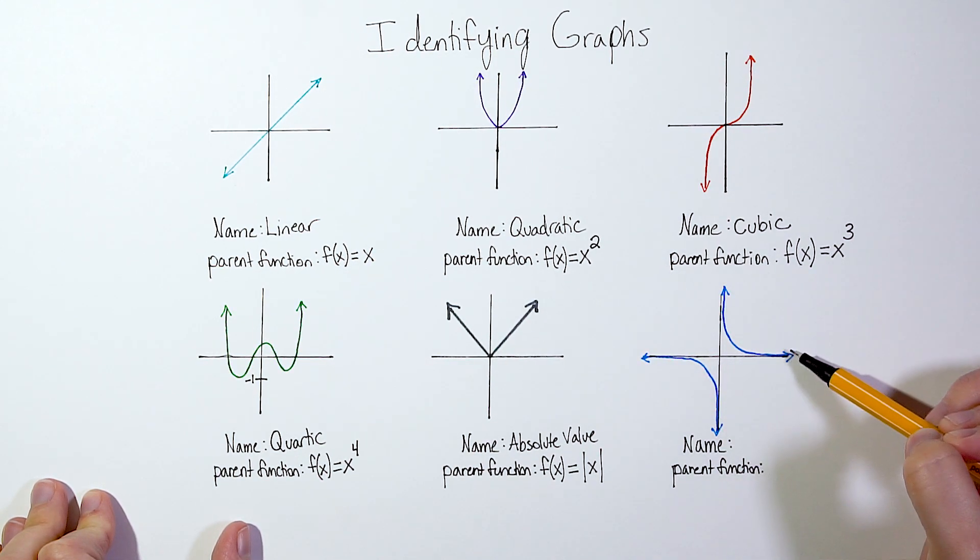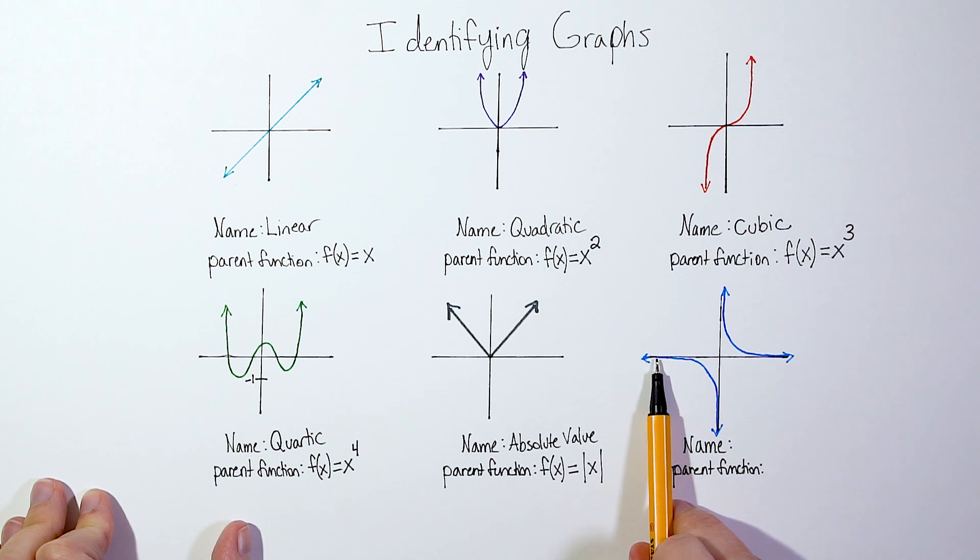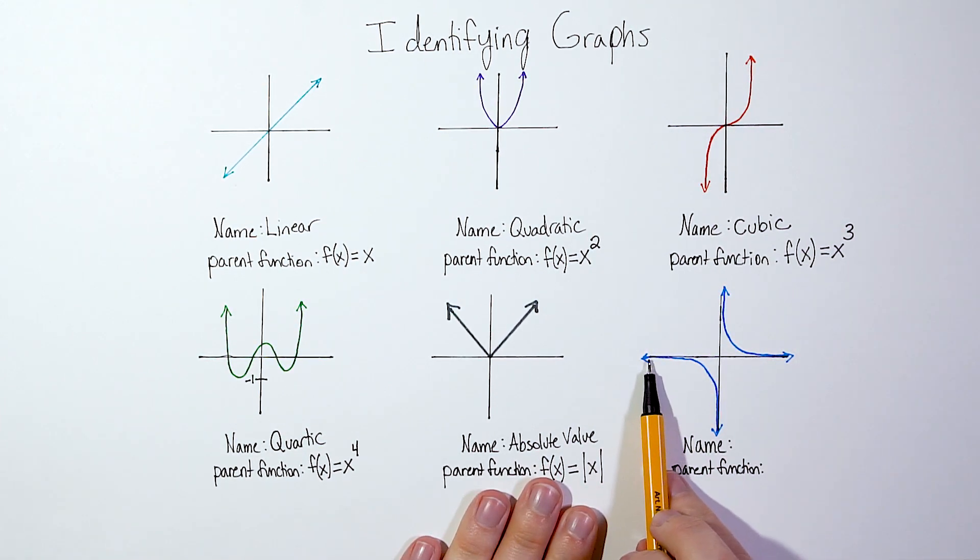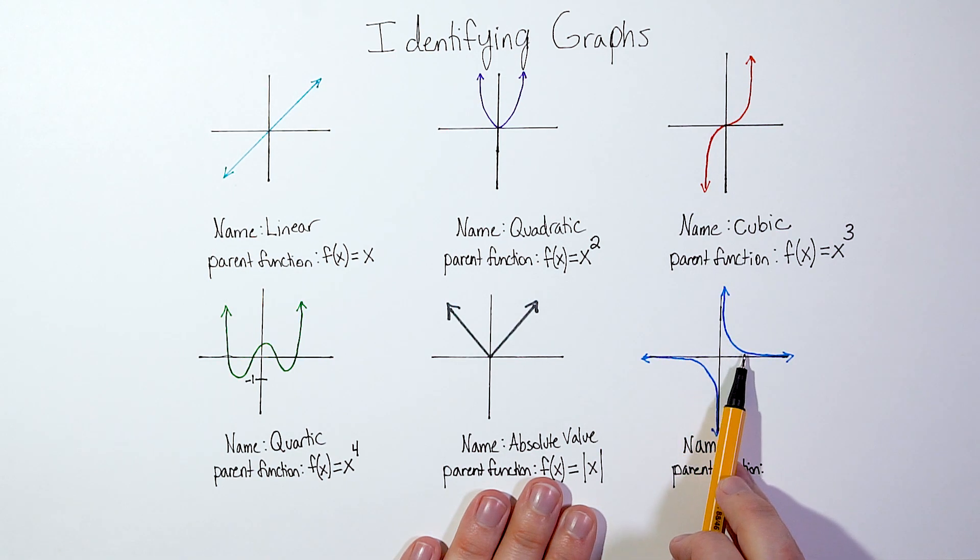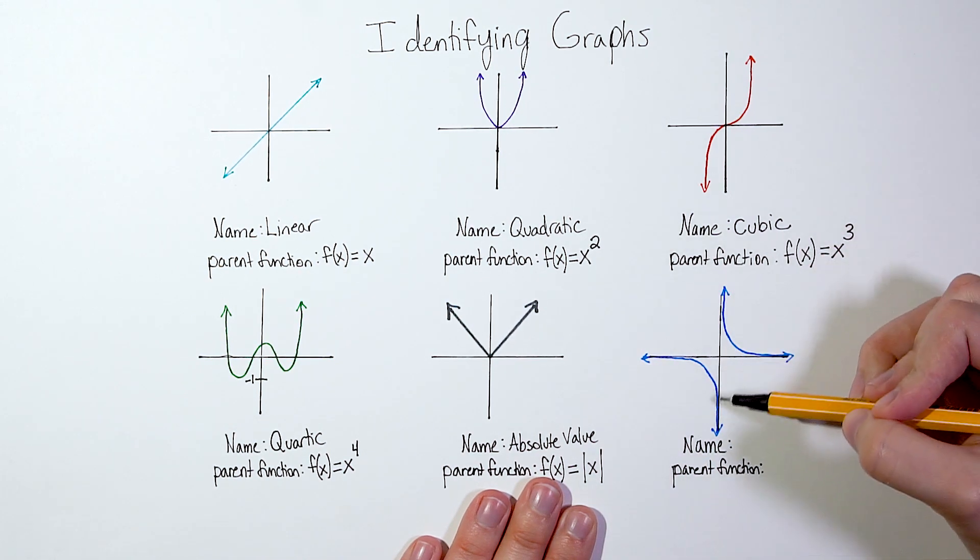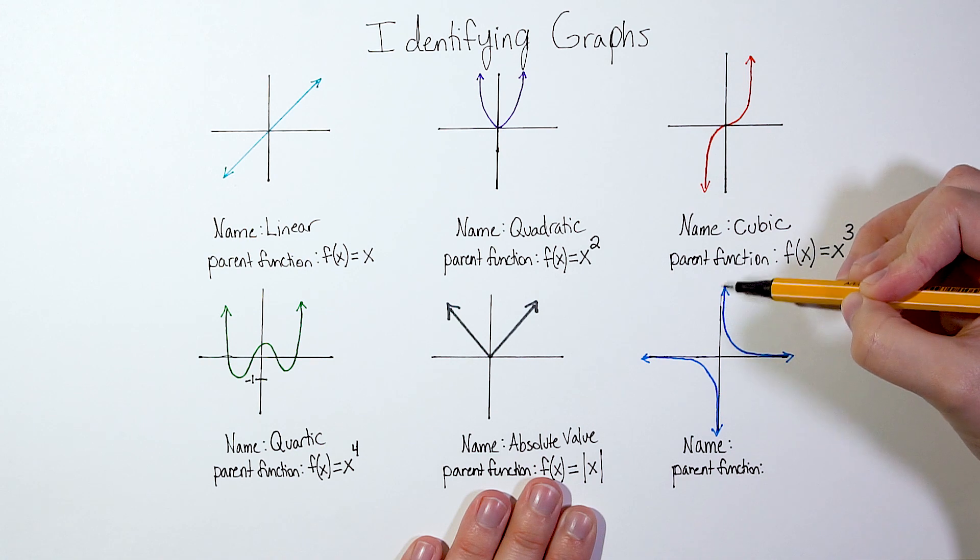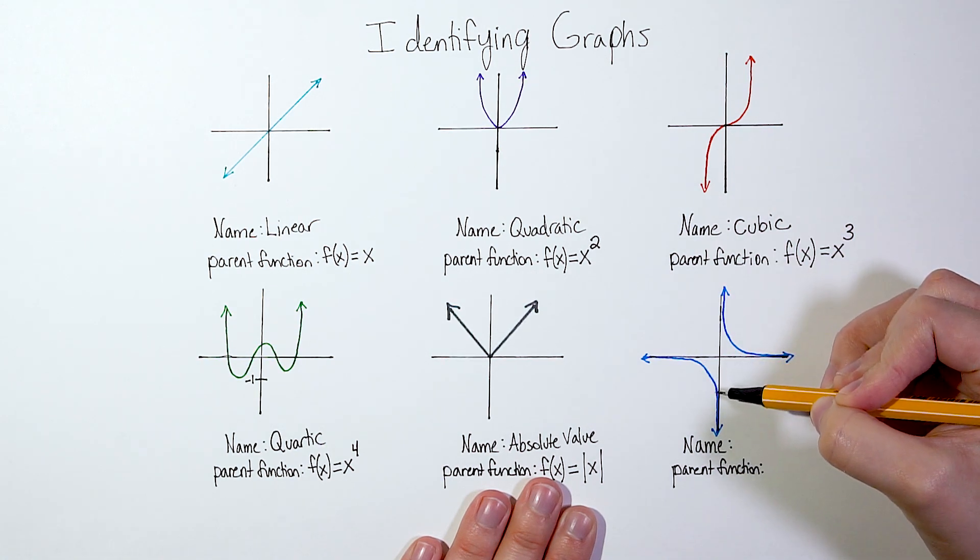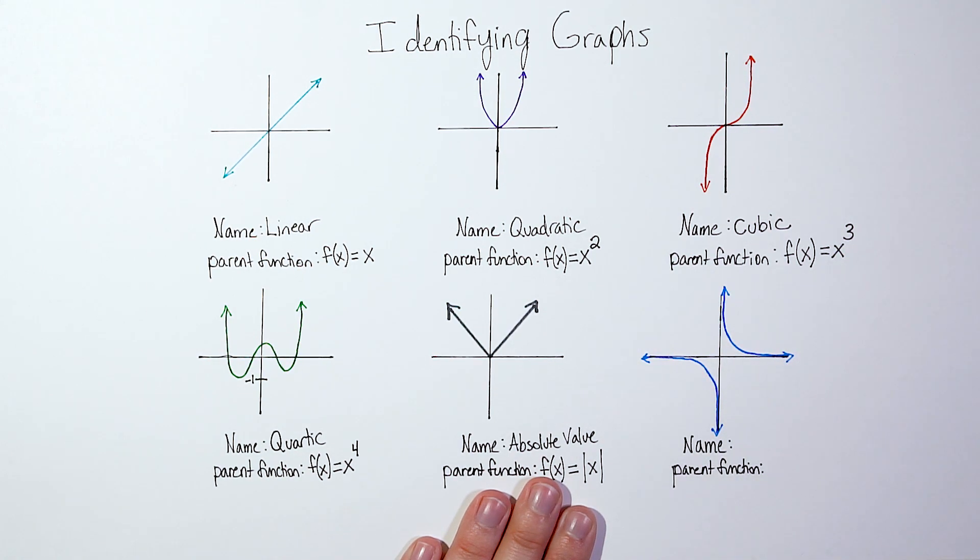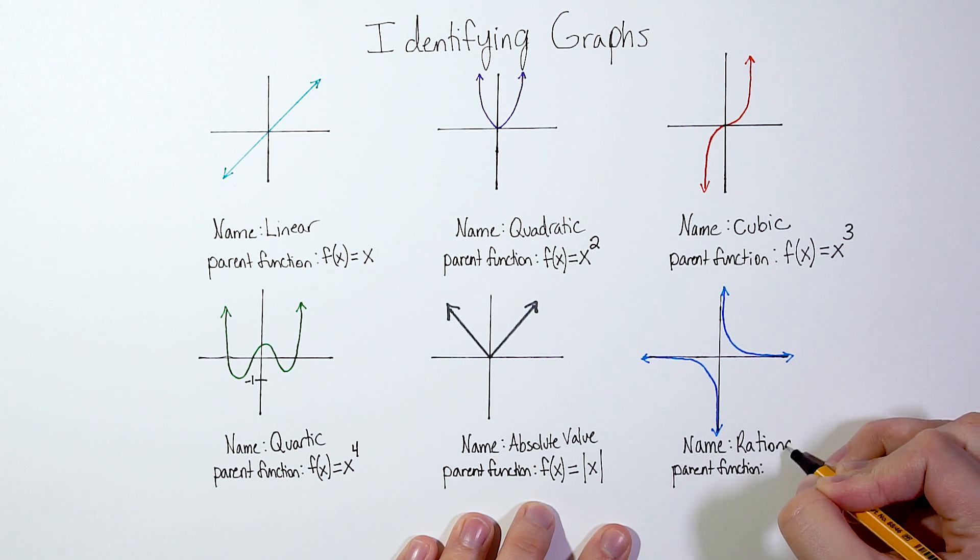This next blue graph, notice it's got two different asymptotes. So an asymptote is kind of like an invisible wall that a line approaches. We have here both a horizontal asymptote where this curve approaches the line of y = 0. So this is called a horizontal asymptote. But it also has a vertical asymptote. Notice this line approaches a vertical line of x = 0, and this line approaches a vertical line of x = 0. And so all together, it creates this cool shape. And we call that a rational function.